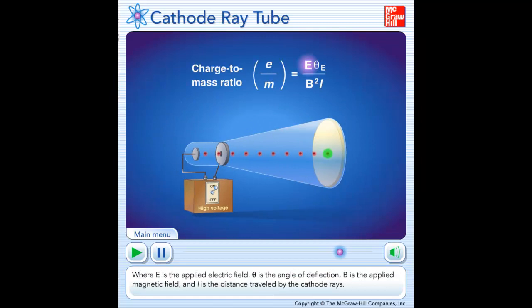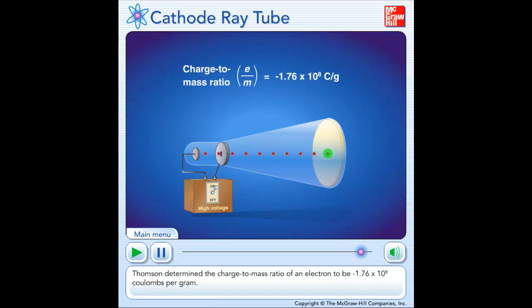Where E is the applied electric field, theta is the angle of deflection, B is the applied magnetic field, and L is the distance traveled by the cathode rays. Thompson determined the charge-to-mass ratio of an electron to be negative 1.76 times 10 to the 8th coulombs per gram.